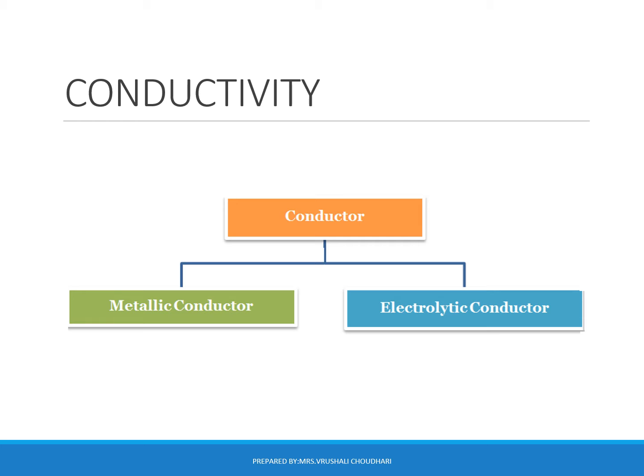There are two types of conductors: metallic conductors and electrolytic conductors. Metallic conductors are solid metals which carry current. Electrolytic conductors: when any salt dissolves in water, the solution is called an electrolyte due to the presence of charged cations and anions, and that solution is called an electrolytic conductor.